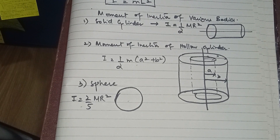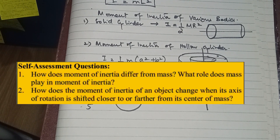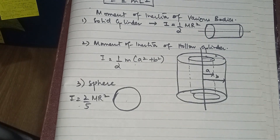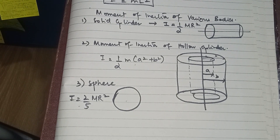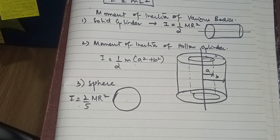Self-assessment question: how does moment of inertia differ from mass, and what role does mass play? Mass is the measure of the amount of matter in an object, with unit kg. Moment of inertia is the property that opposes any change in angular acceleration, with unit kg·m². Mass depends on force and acceleration per Newton's second law, whereas moment of inertia depends not only on mass but also on how the mass is distributed relative to the axis of rotation.